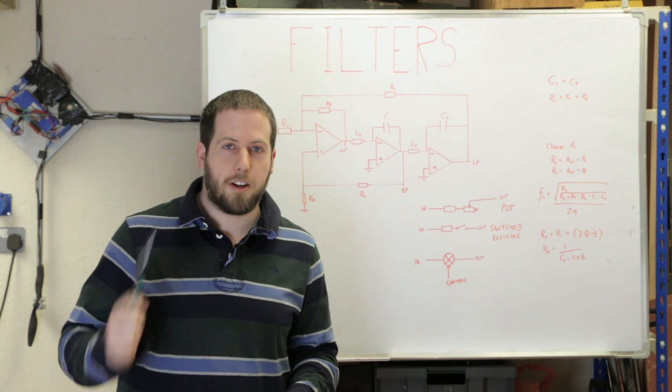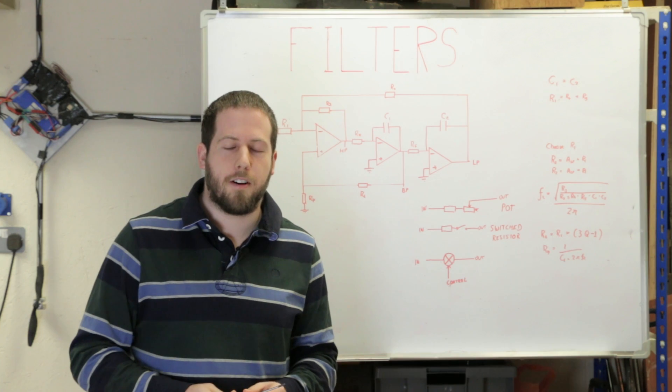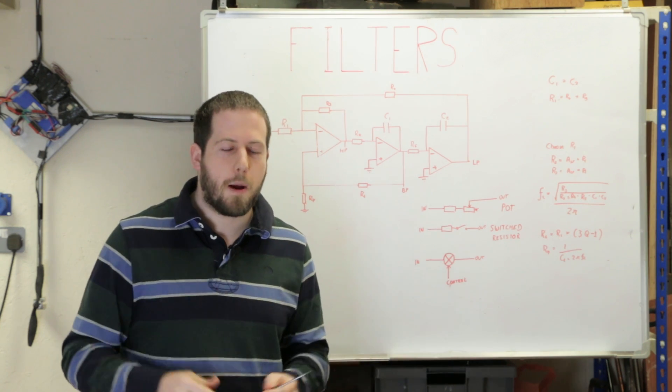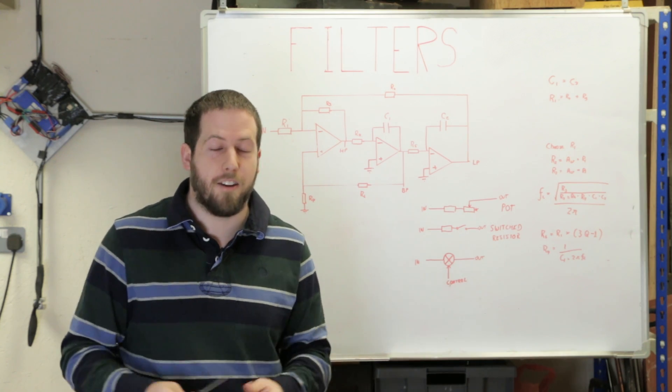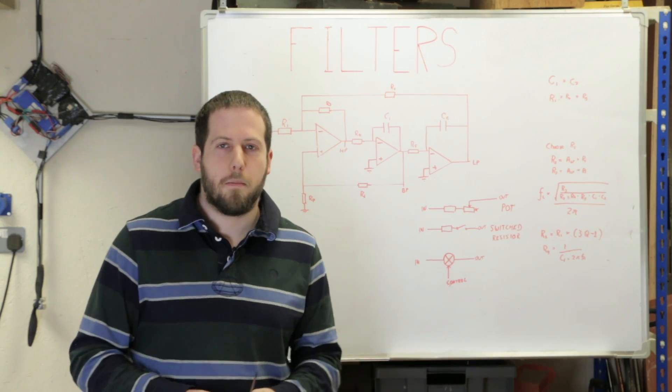One disadvantage with the multiplier option I forgot to mention: cost. Analog multipliers by and large are expensive ICs. The ones I'm actually going to be using in the prototype we're building up today is about £20 per IC. You can get them more inexpensively, but when you talk about precision applications these things just aren't cheap. So let's have a look at the performance of those and do a quick comparison.